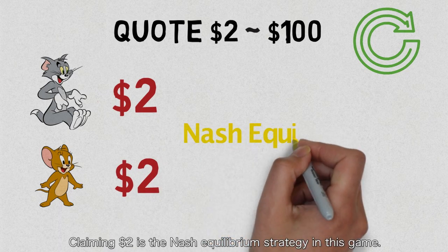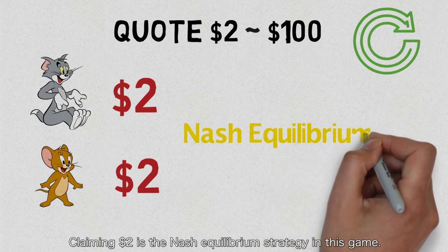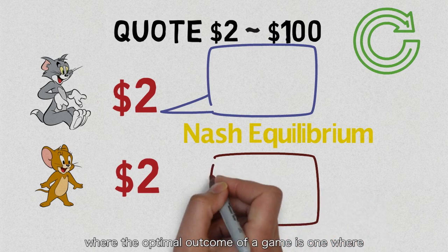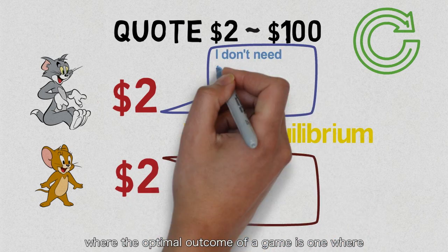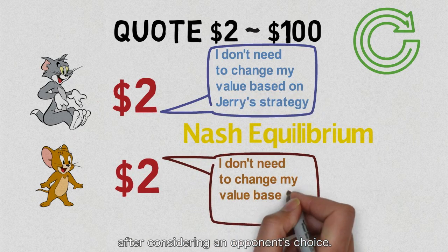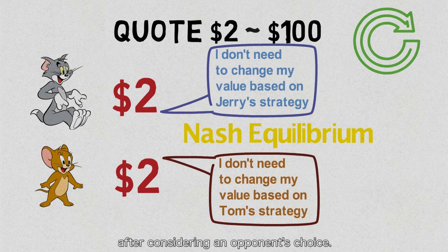Claiming two dollars is the Nash equilibrium strategy in this game. Nash equilibrium is a concept of game theory where the optimal outcome of a game is one where no player has an incentive to deviate from his chosen strategy after considering an opponent's choice.